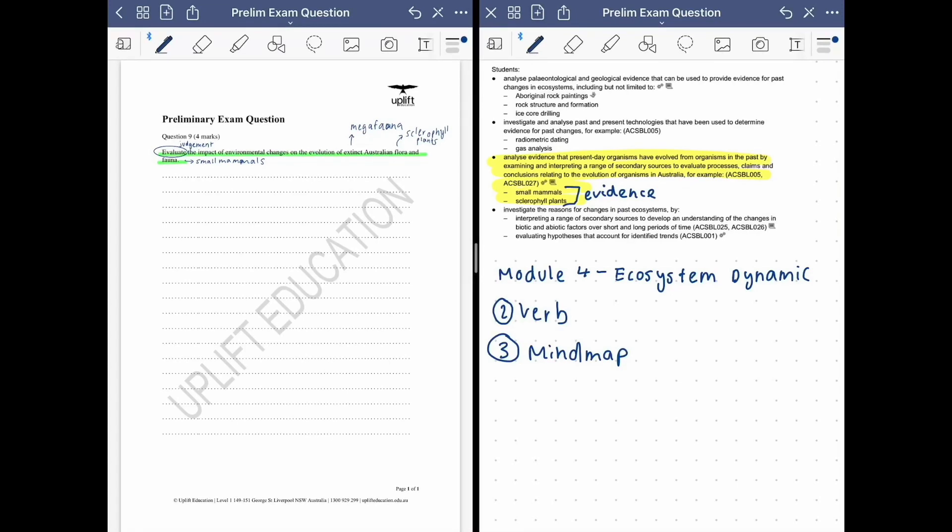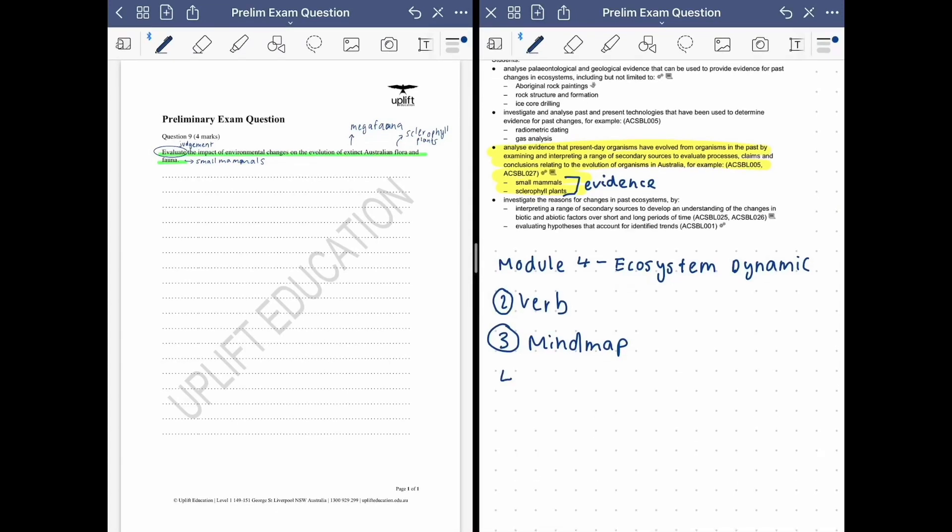The next step is to look at the number of marks allocated to the question. So if we flip over to the left hand side, you can see that this question is worth four marks. Four marks is a high amount of marks for a preliminary exam. So this one is more an extended style question. Also another giveaway that tells us it's a more higher order and higher thinking question is the verb. So evaluate is normally seen in more harder extended style questions as well.